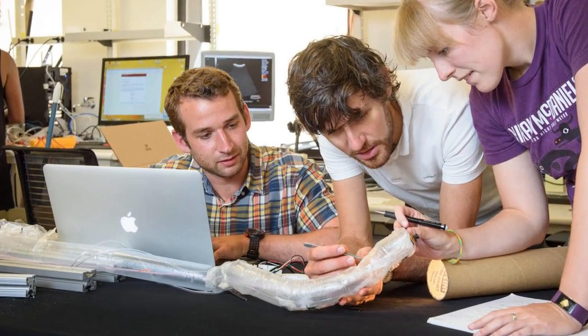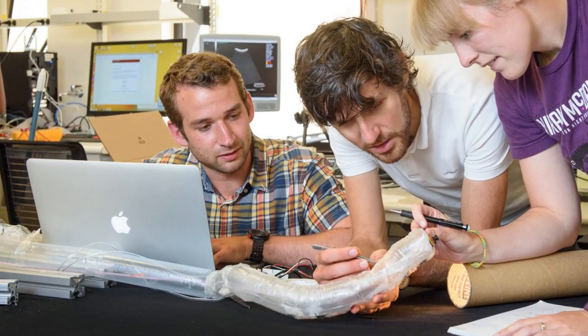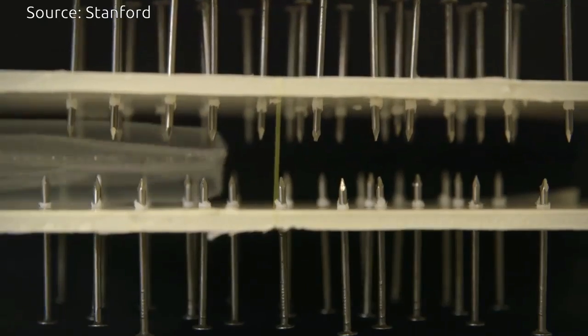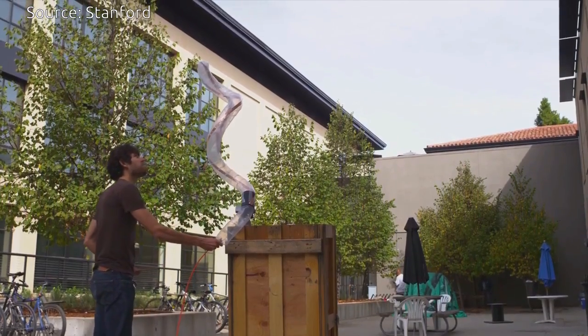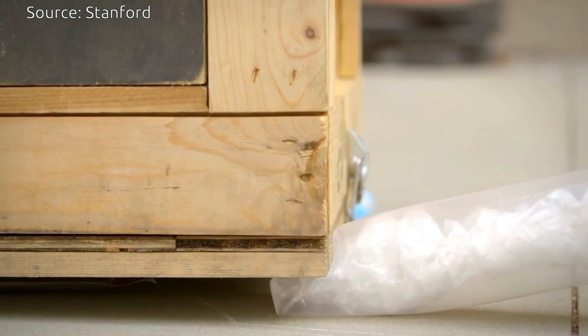Stanford researchers have developed a new type of soft, growing robot. This newly developed vine-like robot can grow across long distances without moving its whole body.